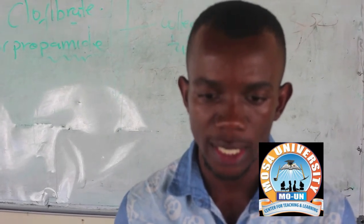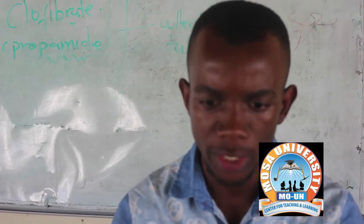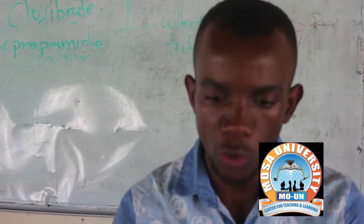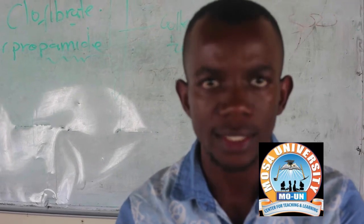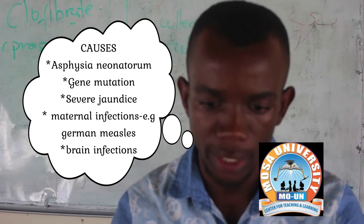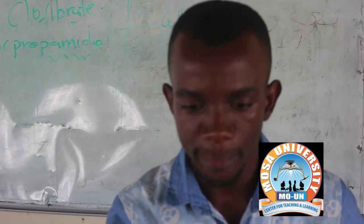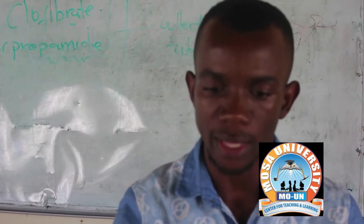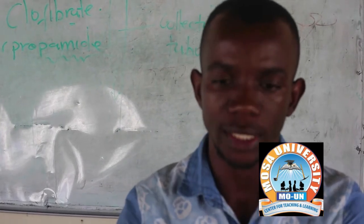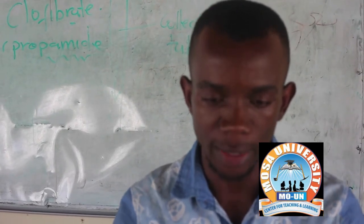Cerebral palsy has various causes, and in the developing child the resulting clinical picture is not static. It can be caused at any time during pregnancy, during delivery, or up to five years of age. It interferes with normal development because it arises early in life and is often associated with other neurological and mental problems.